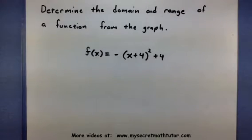For the example I've cooked up, I have f(x) = -(x+4)² + 4. Let's take a look at the graph and see exactly how I can use it to find my domain and range.